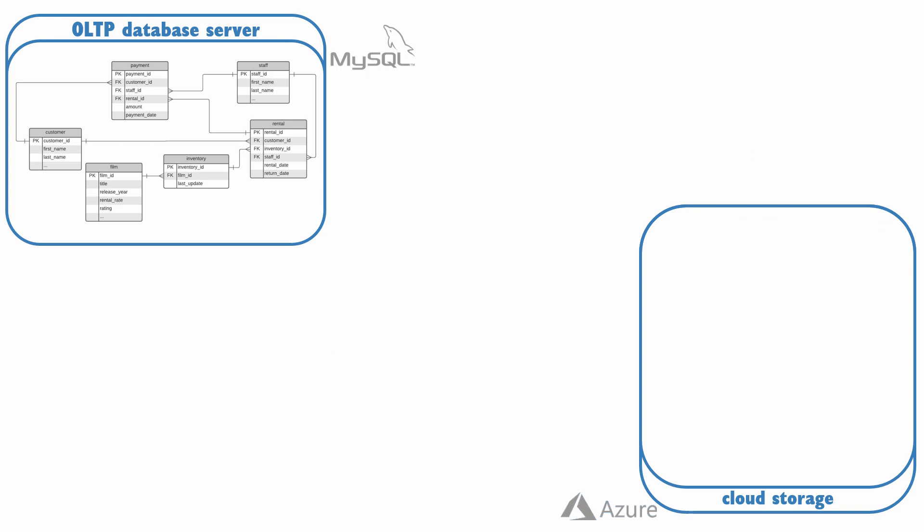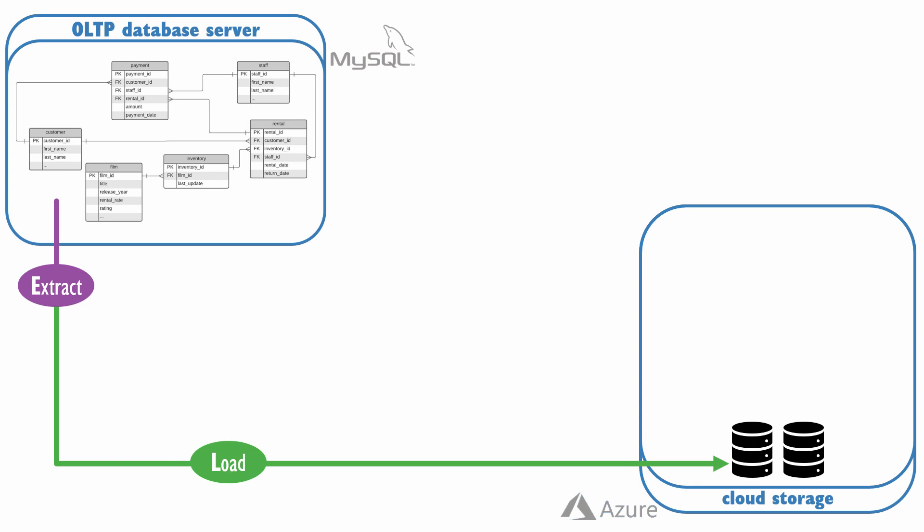Fast forward to today, where new OLTP databases are created on more modern systems like MySQL and Postgres, and data warehouses exist on cloud platforms like Azure, GCP, and AWS. This modern architecture starts with a new breed of tools, like Airbyte, which calls itself an Open Data Movement Platform and focuses on securely extracting data from all your sources and reliably loading it into your data warehouse. In this example, data is copied into cloud object storage and converted into Snowflake's hybrid columnar format.